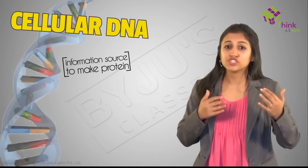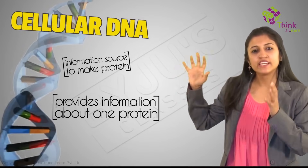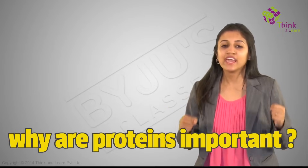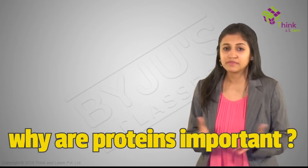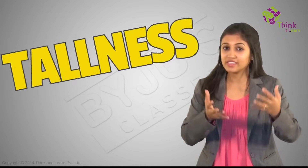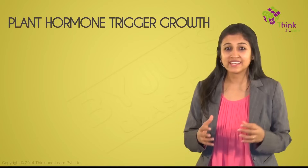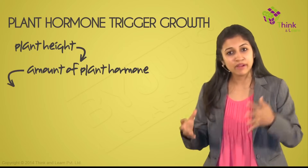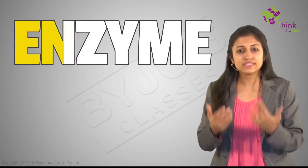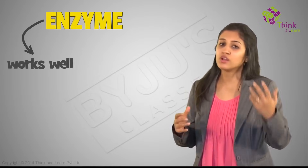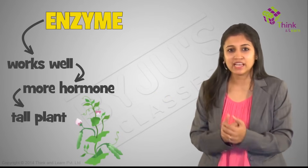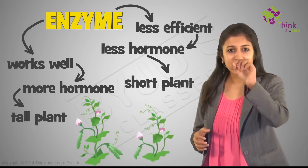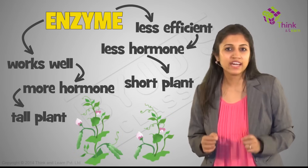Cellular DNA is the information source for making proteins in the cell. A section of the DNA that provides information for one protein is called the gene of that protein. Why exactly are proteins so important? Take the example of tallness: plants have hormones that can trigger growth, and plant height can depend on the amount of a particular plant hormone. If the enzyme responsible for making that hormone works well, a lot of hormone is made and the plant is tall. If the gene for that enzyme has an alteration making it less efficient, the plant will be short. That's exactly how genes control characteristics or traits.